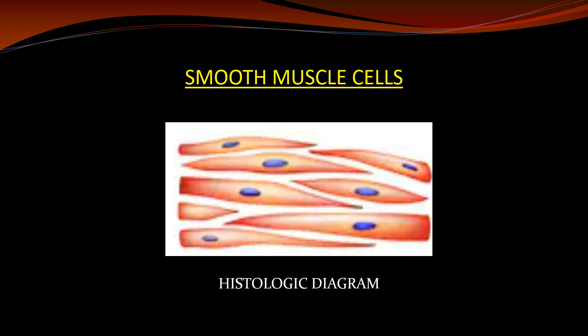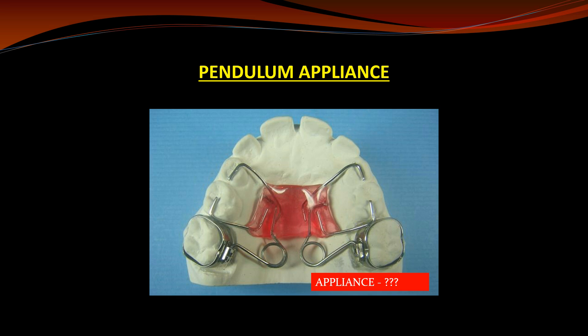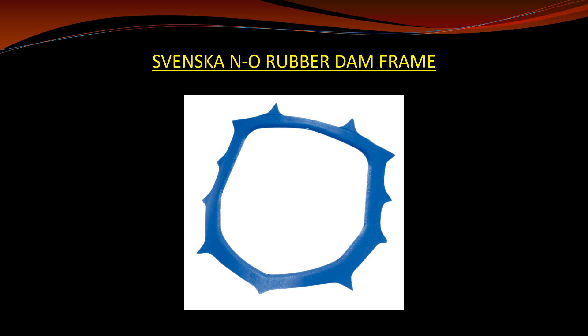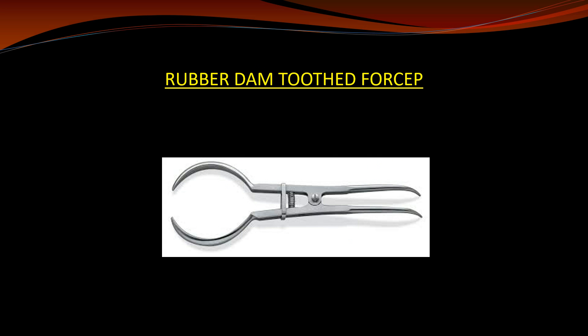The first question I'm covering here is a histological diagram of smooth muscle cells, which came in today's question paper. Next question is pendulum implants. Next is implant torque wrench — you can see the diagram and the name. The next question is Svensen and rubber dam frame, and the next image was rubber dam tooth forcep.